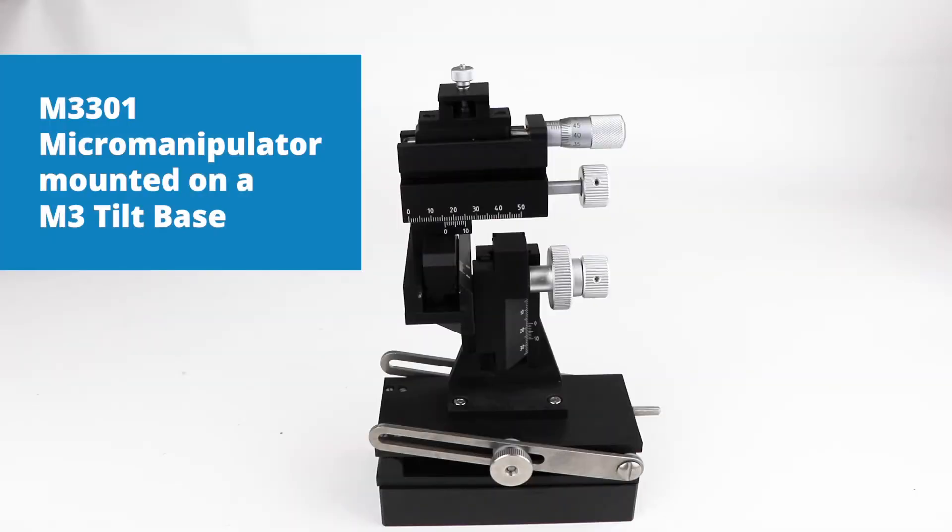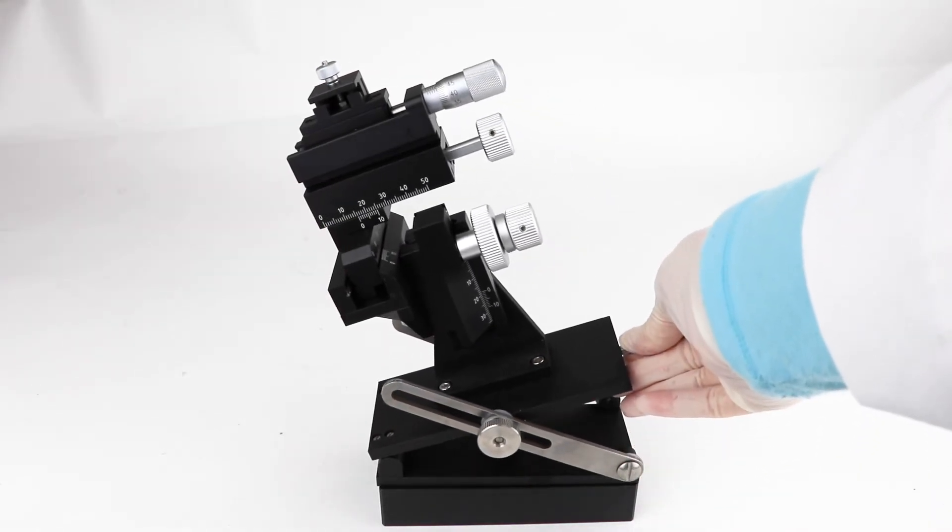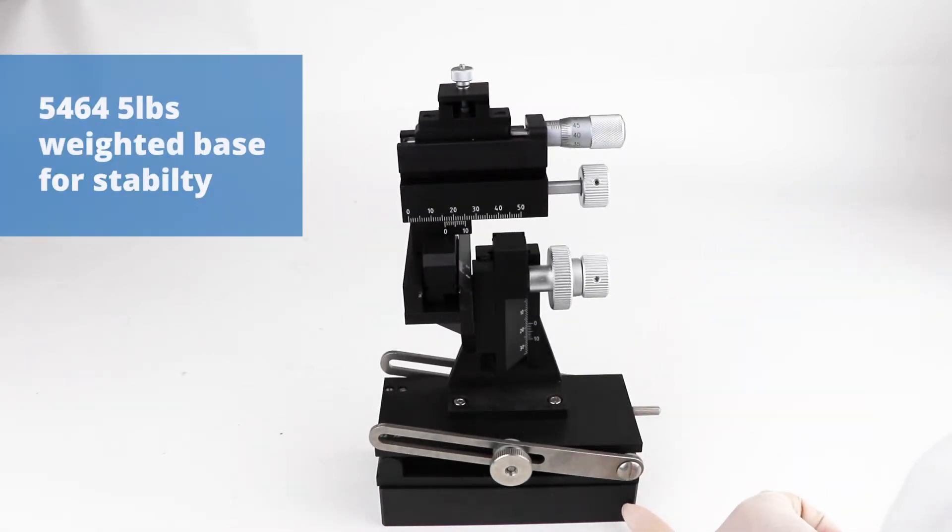This is a popular M3301 micromanipulator and it's mounted on an M3 tilt base down here so that you can position it the way you want. And it's also got a 4 to 5 pound weighted base for stability.